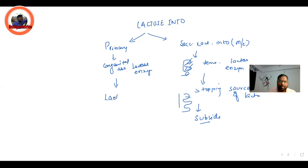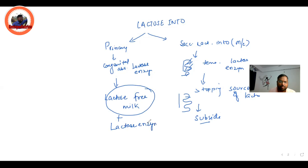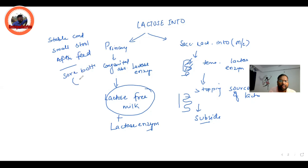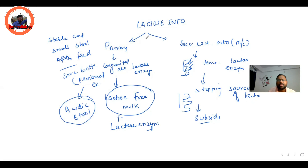For primary lactose intolerance, you have to give lactose-free milk along with lactase enzyme. Clinically, a child with lactose intolerance presents in a stable condition, passing small stools shortly after each feed, with a sore bottom — that is perianal excoriation. This occurs due to the acidic nature of the stool. So if you see perianal excoriation only, think of lactose intolerance, supported by a positive reducing substance in the stool.